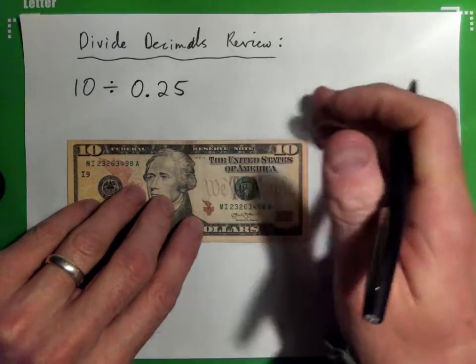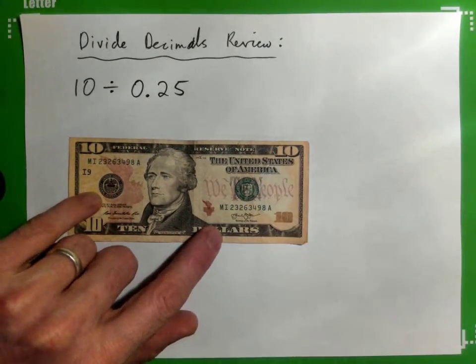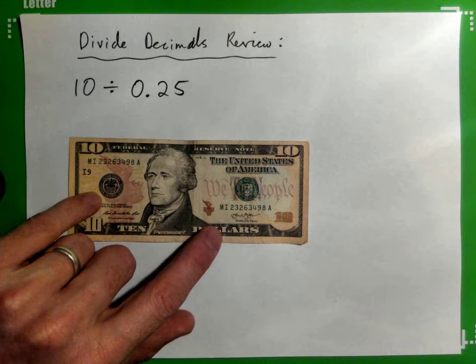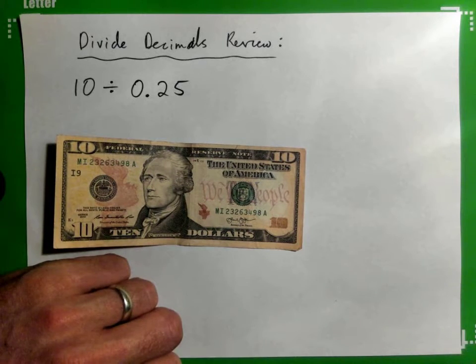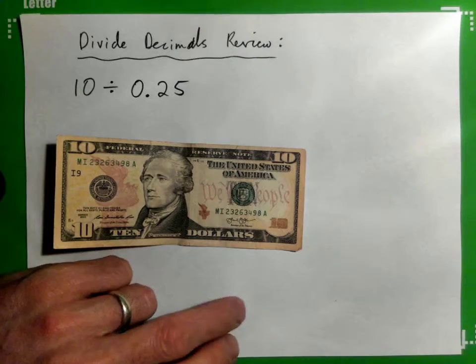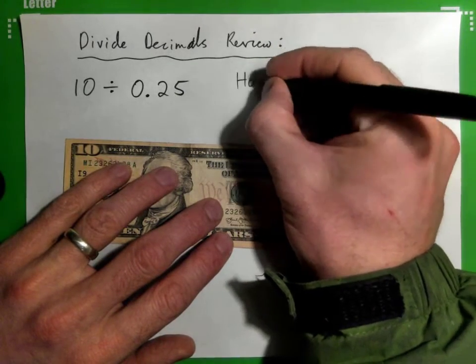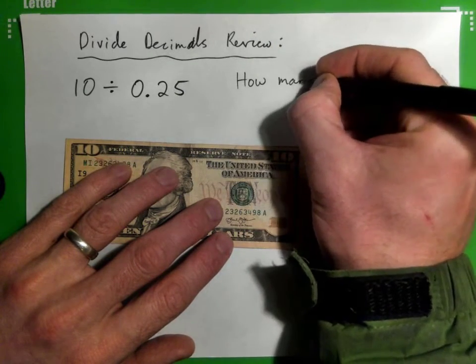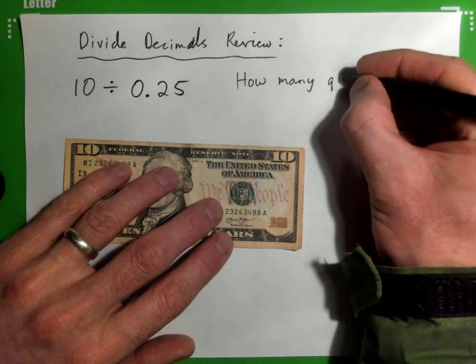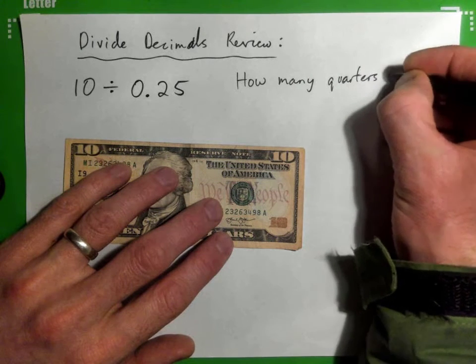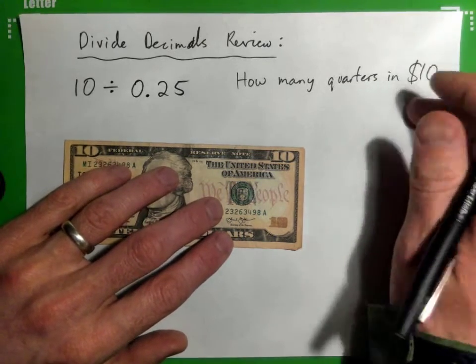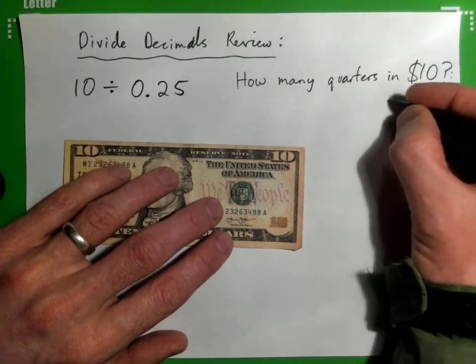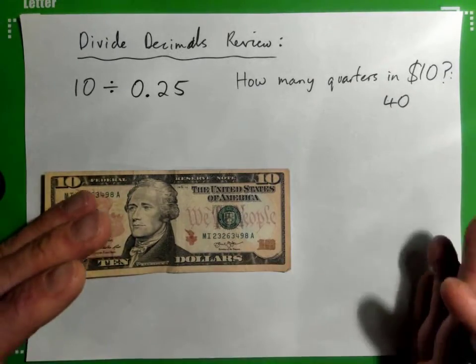Just tell me what the answer is. Take your time and figure it out without a calculator. Just think about it - how many quarters do you think are in $10? Yeah, do we all agree with that? It's 40, right? So we all agree it's 40.